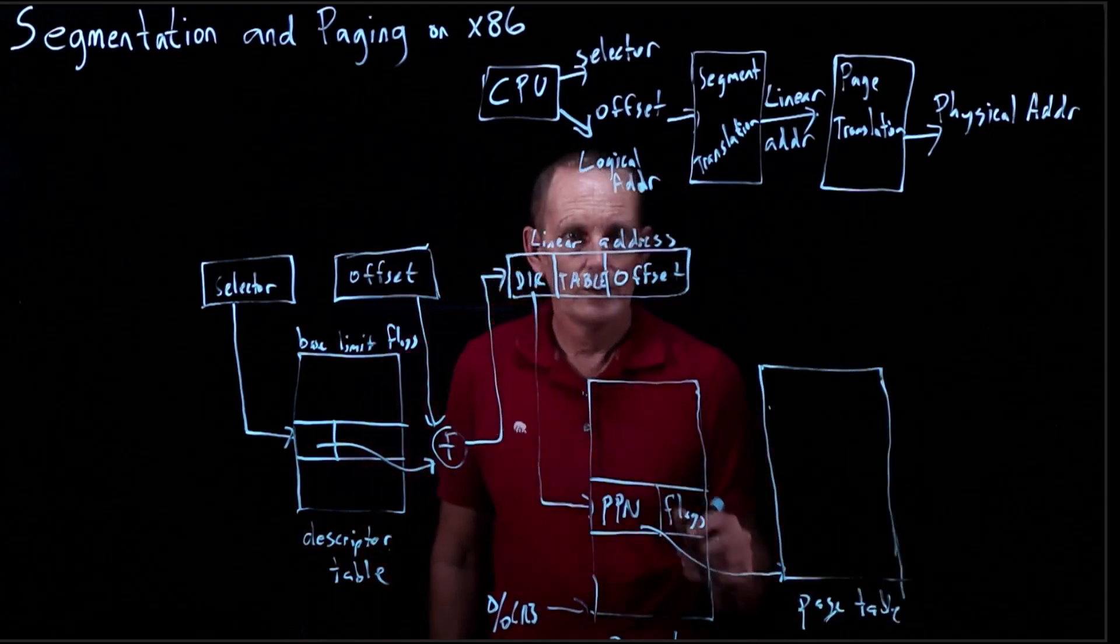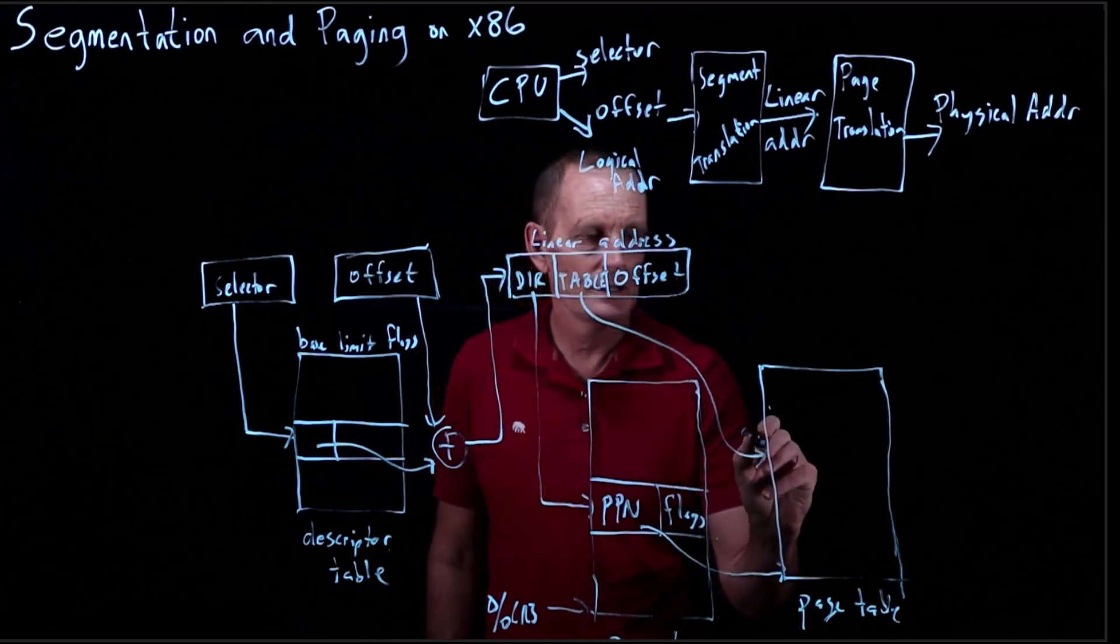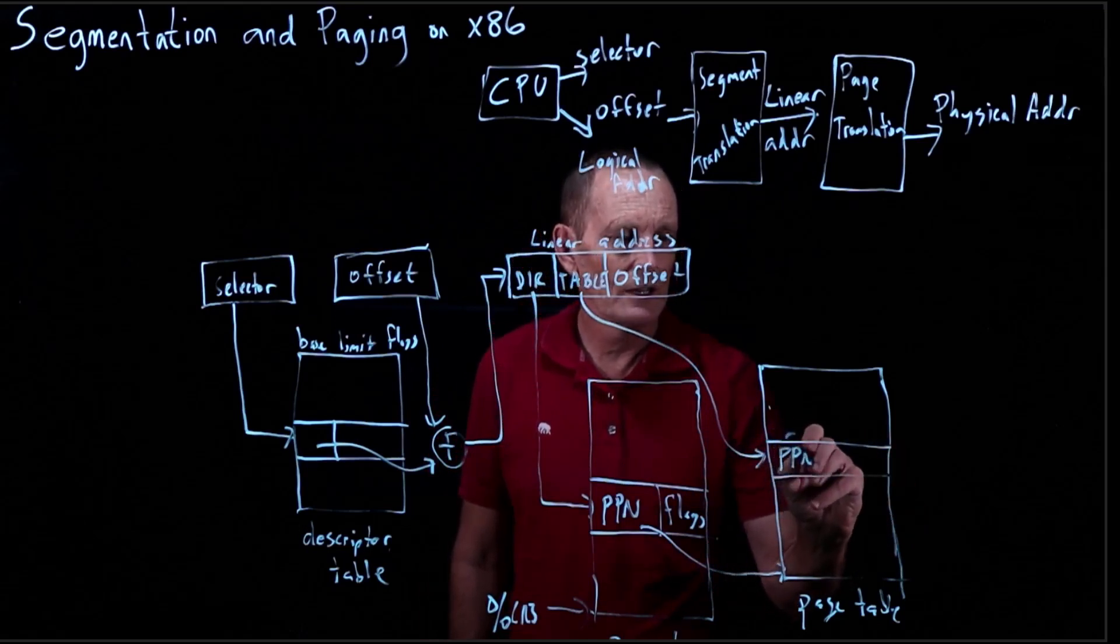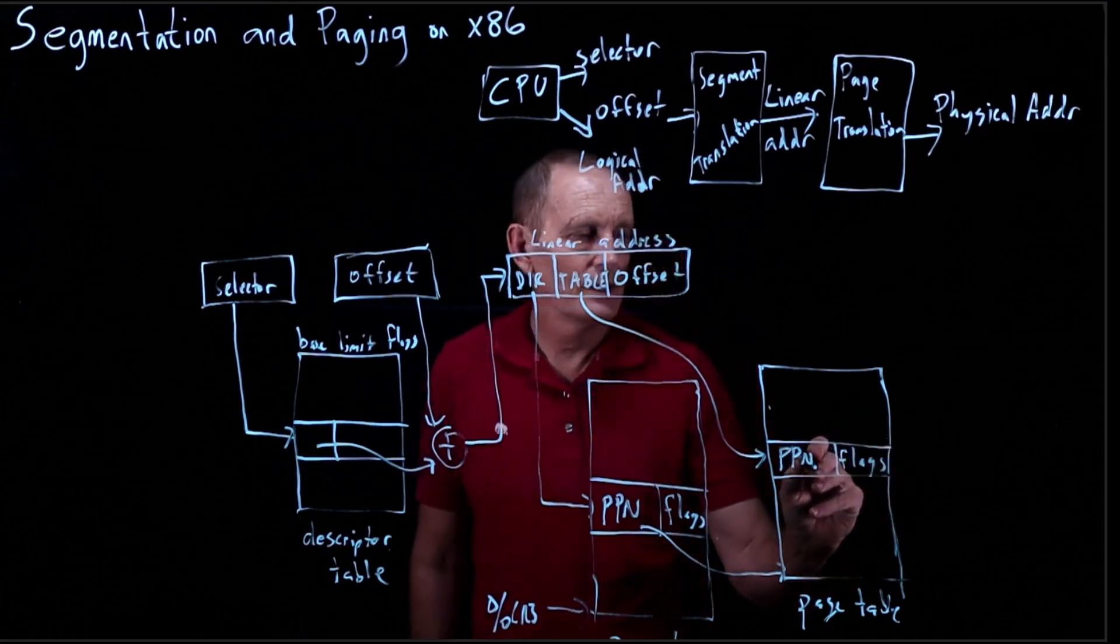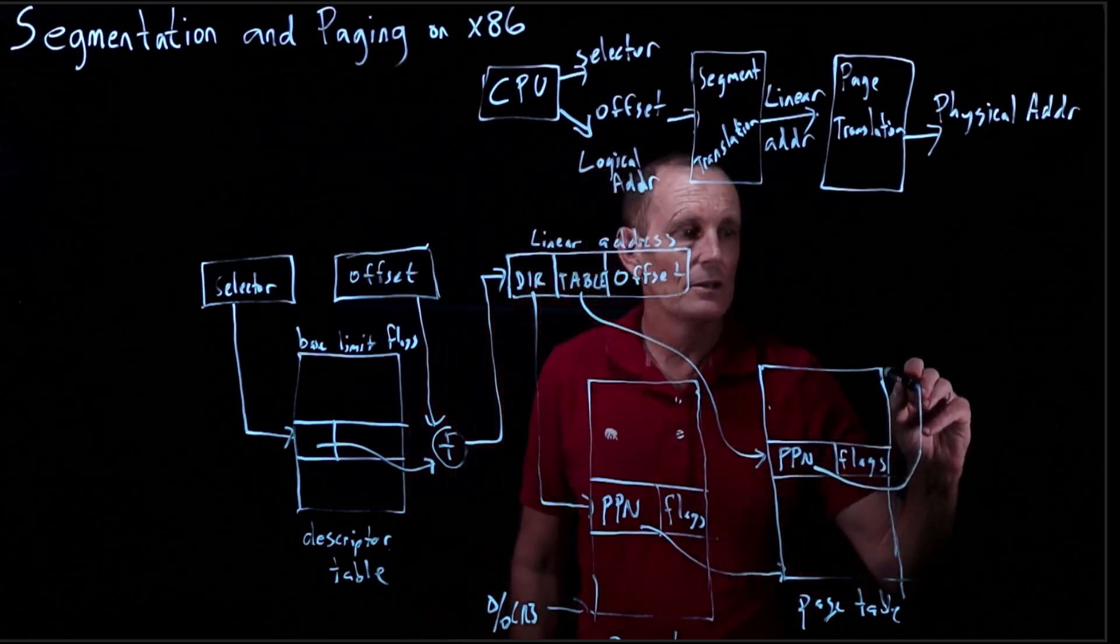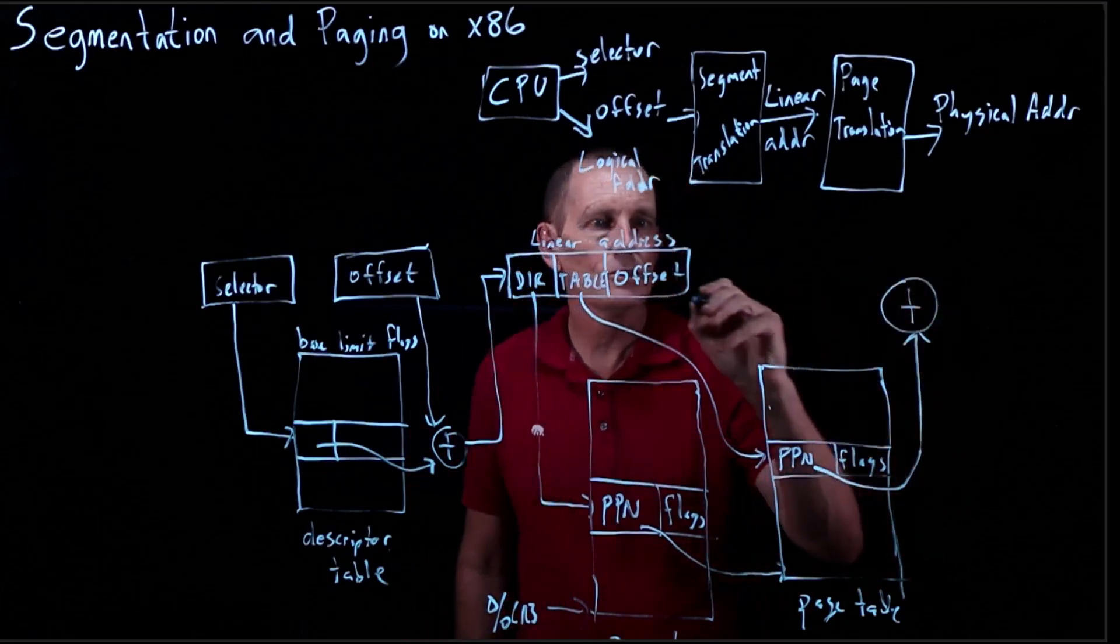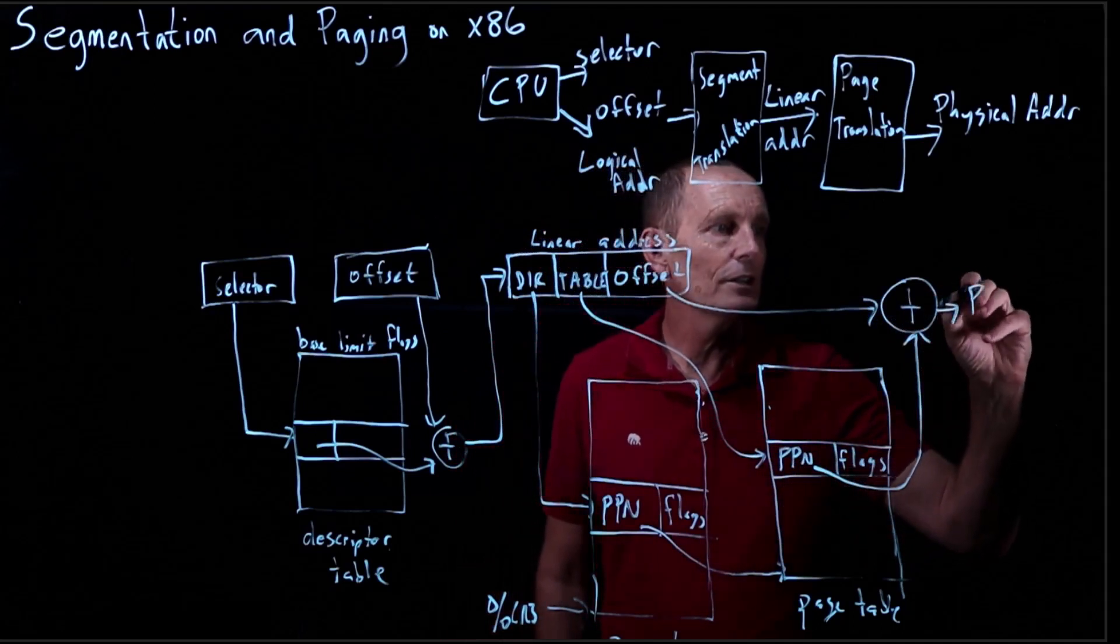The table is an index into the particular page table, which has a physical page number and some flags. That physical page number gets added to the offset, and that gives us the physical address.